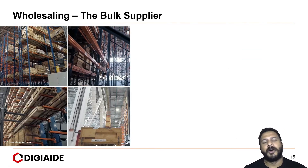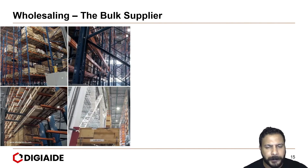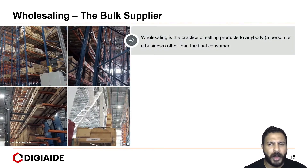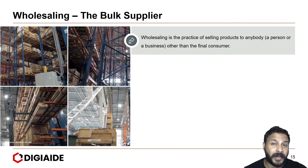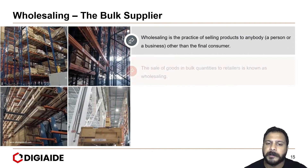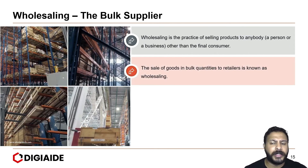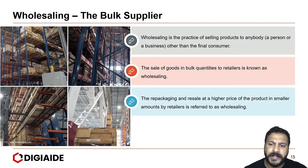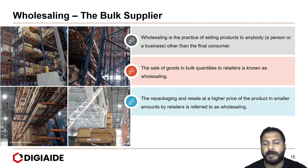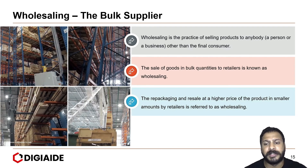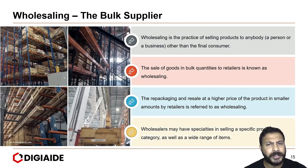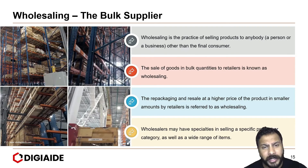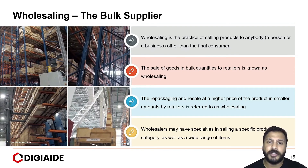Moving on to wholesaling. Wholesaling is all about being the bulk supplier. It is the practice of selling products to anybody — a person or a business — other than the final consumer who might consume it. The sale of goods in bulk quantities to retailers is known as wholesaling. Wholesalers may have specialities in selling a specific product or an entire category, as well as a wide range of items.